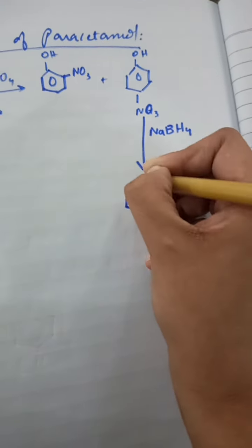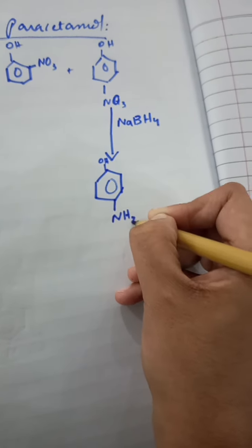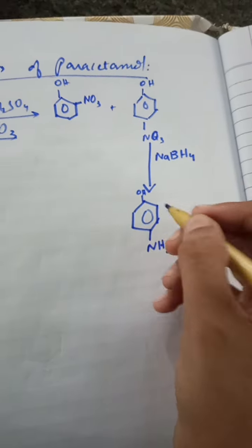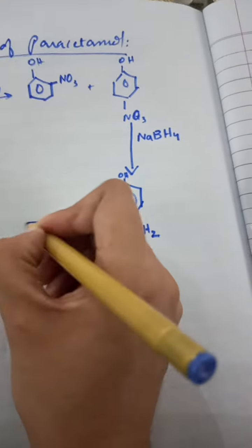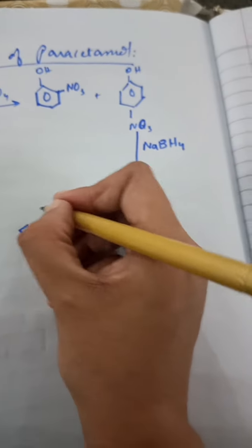So it becomes this, NH2, 4-aminophenol. Then 4-aminophenol in the presence of acetic anhydride.